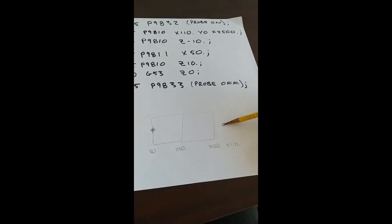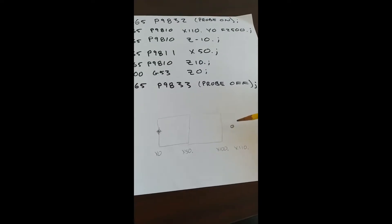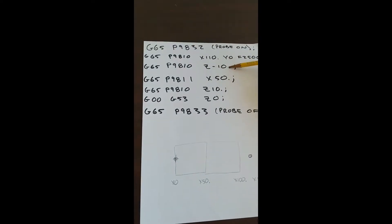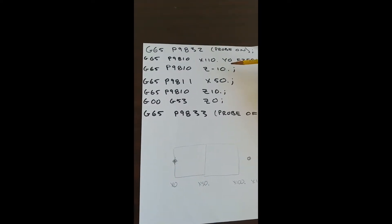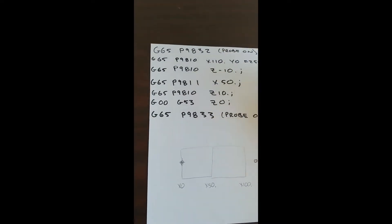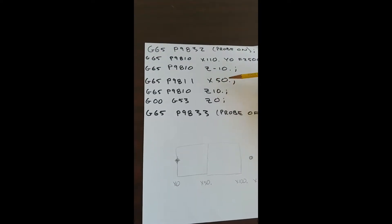So by commanding the probe to go to X110, it's going to be off of the stock regardless of which piece I put in. Then I'm going to again use the positioning move to go 10 millimeters below the Z surface. Then I'm going to use G65-P9811, which is the measure move. So I'm going to command it to go to X50.